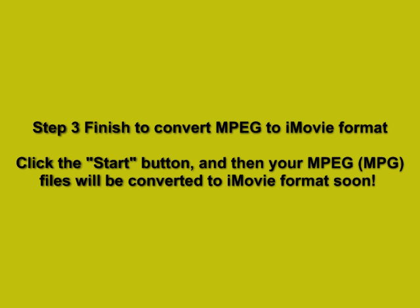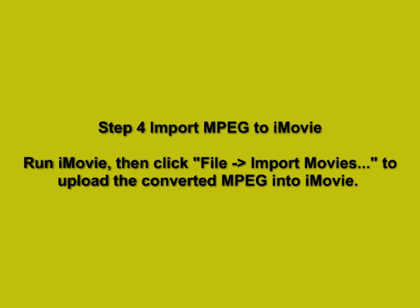Step 3 — Convert MPEG to iMovie format: Click the Start button and your MPEG/MPG files will be converted to iMovie format. Step 4 — Import MPEG to iMovie: Run iMovie, then click File > Import Movies to upload the converted MPEG into iMovie.